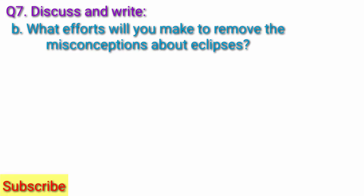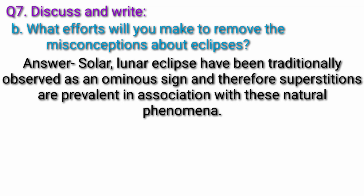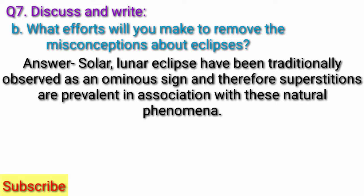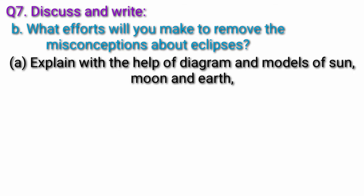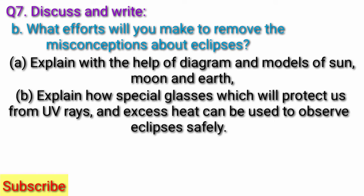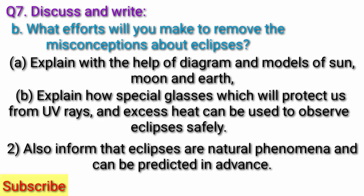Question B: What efforts will you make to remove the misconceptions about eclipses? Answer: Solar and lunar eclipses have been traditionally observed as ominous signs and therefore superstitions are prevalent in association with this natural phenomena. All these misconceptions should be removed by explaining scientifically the process of eclipse and how it happens. Explain with the help of diagrams and models of sun, moon and earth. Explain how special glasses which will protect us from UV rays and excess heat can be used to observe eclipses safely. Also inform that eclipses are natural phenomena and can be predicted in advance.